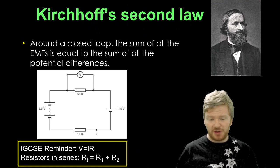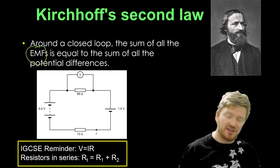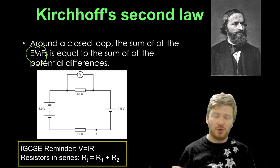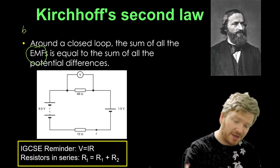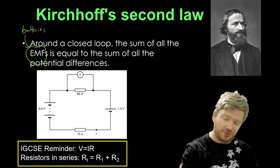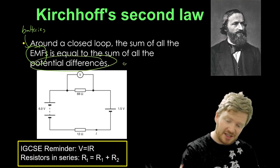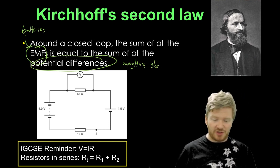Kirchhoff's second law tells us that around a closed loop, the sum of all the EMFs, if we remember EMFs, that's the voltage or the potential difference work done on charges. So basically it means batteries or power supplies or whatever. It's equal to the sum of all the potential differences. So that means basically everything else. Everything that uses up energy. So what does that mean?